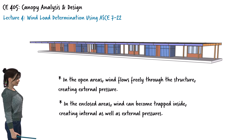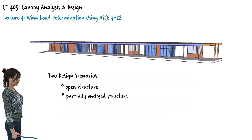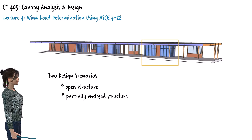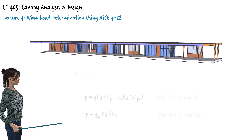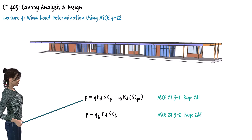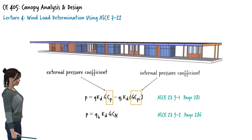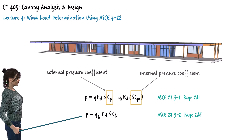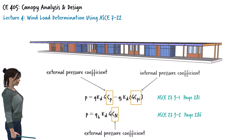To cover all possible wind effects on the frames, we'll consider two scenarios: one where the structure is treated as open, and one where it's treated as partially enclosed. We'll use Equation 27.3-1 for the partially enclosed portions of the bus terminal, as this equation includes both internal and external pressure coefficients. For the open canopy areas, we'll use Equation 27.3-2, which considers only external pressure since there is no enclosed volume to trap air. Using both equations allows us to evaluate wind pressure across the full range of conditions present in the structure.